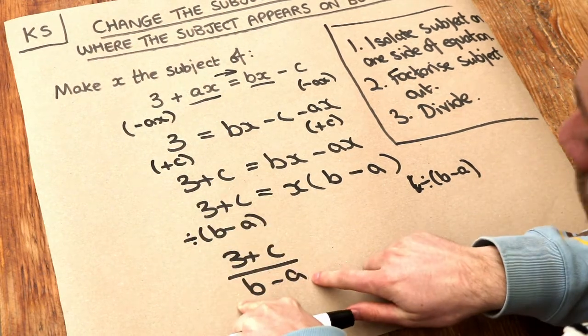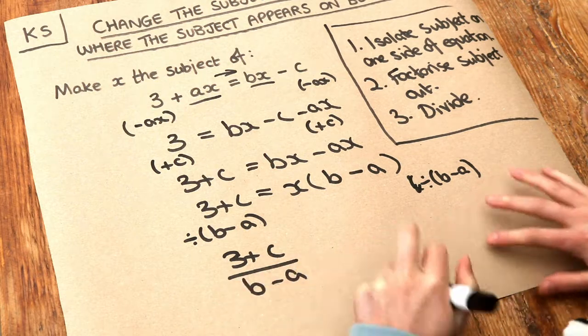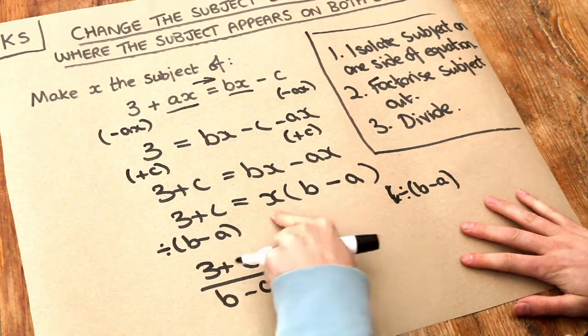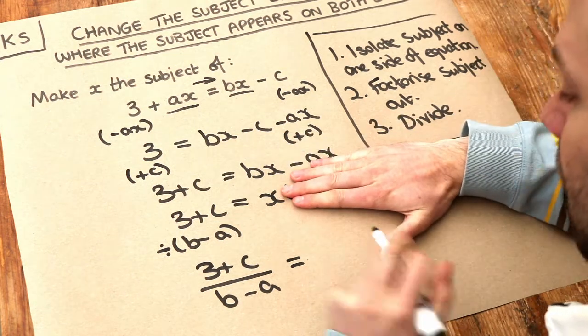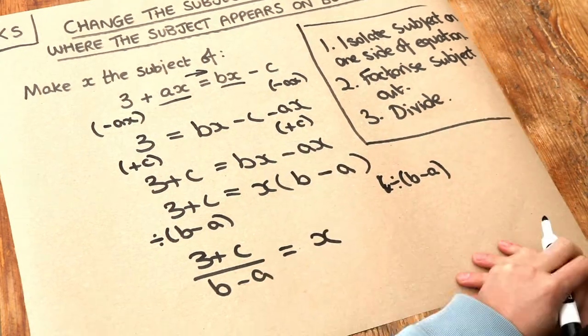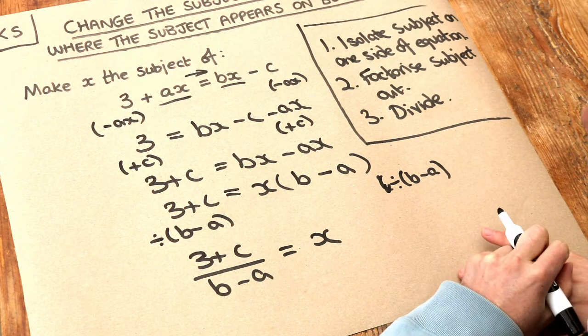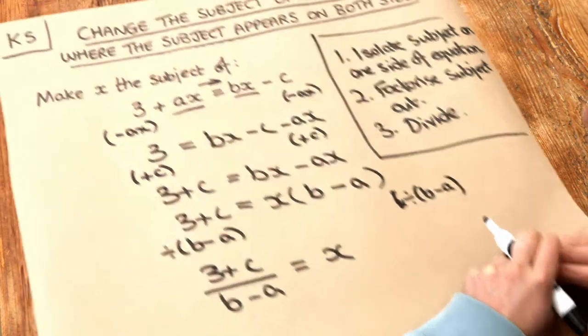We don't need the brackets around it by the way because there's nothing else around that denominator. If we divide the right hand side of the equation by b minus a it just gets rid of that b minus a, leaving just x. And now we're done because x is on its own on one side of the equation and it's therefore the subject.